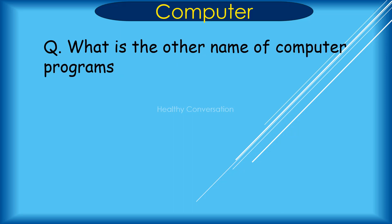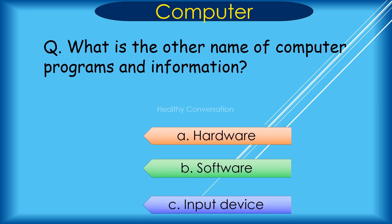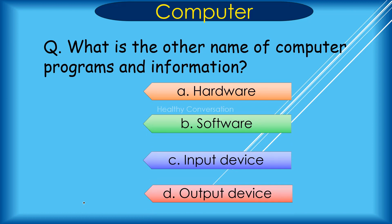Question: What is the other name of computer programs and information? A. Adware, B. Software, C. Input Device, D. Output Device. Correct answer is B. Software.